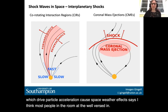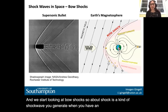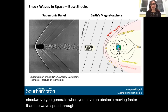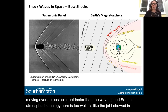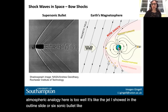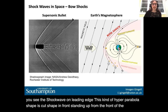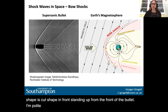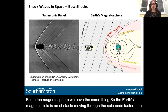Bringing it closer to home yet again, we start looking at bow shocks. A bow shock is a kind of shock wave generated when an obstacle moves faster than the wave speed through a medium — equivalently, a flow moves over an obstacle faster than the wave speed. The atmospheric analogy is a supersonic bullet, shown here in a shadowgram. You can see the shock wave on the leading edge — this hyperbola-shaped curved shock standing off from the front of the bullet. The bullet also has several other shocks trailing behind due to geometric effects.